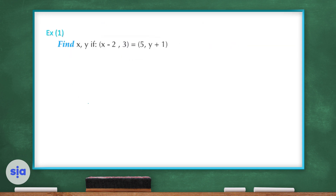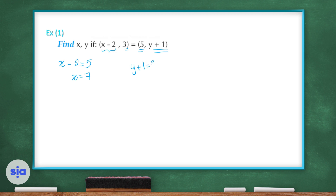Let's see another example. We have two ordered pairs equal to each other and we need to find x and y. Since x values are equal: x minus 2 equals 5, so x equals 7. Since y values are equal: y plus 1 equals 3, so y equals 2.